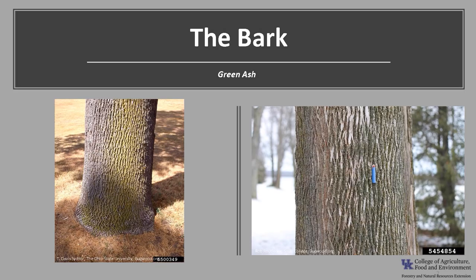The bark is gray to brown in color and has ridges that interlace to form diamonds. On older trees the bark may become somewhat scaly. The bark looks similar to white ash, but the furrows are not as deep.